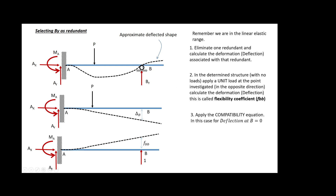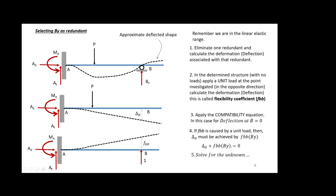Then we apply the compatibility equation. We know the deflection in the real beam has to be zero at B. Since the flexibility coefficient was produced by a unit load and we are in the linear elastic range, the actual deflection delta_B is achieved by multiplying the flexibility coefficient by By. That quantity plus the deflection from the external load should equal zero, and then we solve for By.